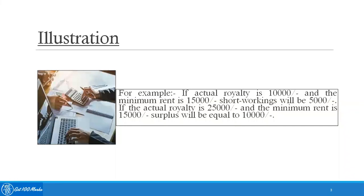...short workings will be 5,000. If the actual royalty is 25,000 and the minimum rent is 15,000, surplus will be equal to 10,000. So in other words...